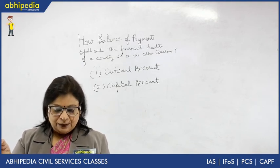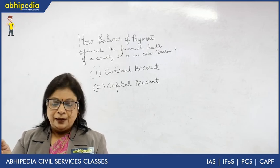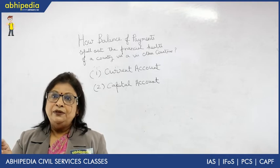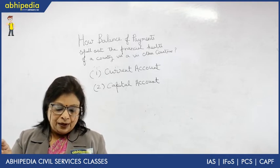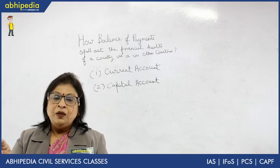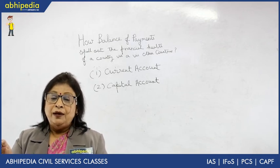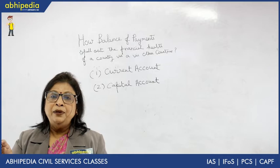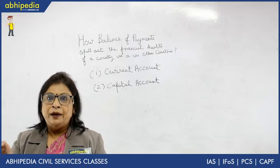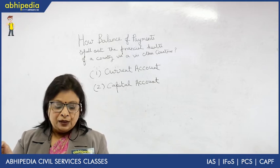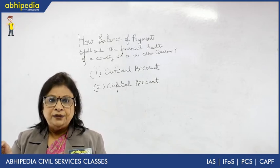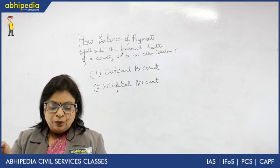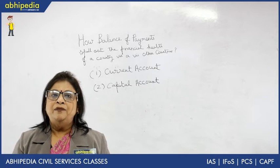Now we have the capital account. Capital account brings change in the assets and liabilities status of the residents of a country or its government. Capital account includes private foreign loan flow — loans we are getting from other countries from the private sector. Then movements of banking capital from one country to another. Then official capital transactions, reserve monetary gold, and SDR — Special Drawing Rights issued by the International Monetary Fund. Then gold movements and miscellaneous — these are part of our capital account.